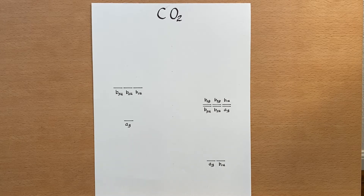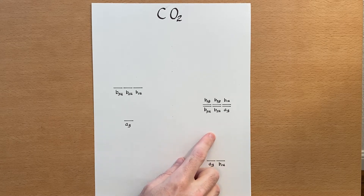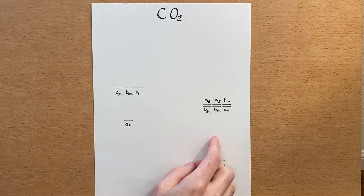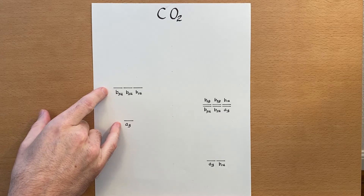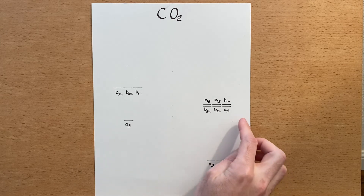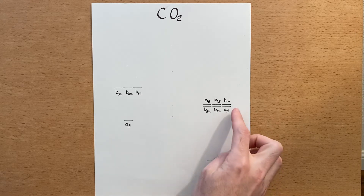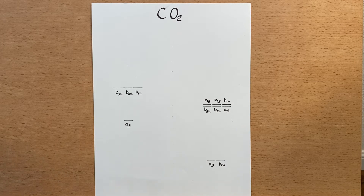Let's draw the molecular orbital diagram for carbon dioxide. In a previous video we determined the molecular orbital representations for the carbon and oxygen atoms in carbon dioxide. Carbon is on the left, oxygen is on the right. The carbon atoms have a higher energy than the oxygen, because oxygen has lower energy atomic orbitals, so they're shifted down a little bit. This is approximately to scale with the orbital energies.